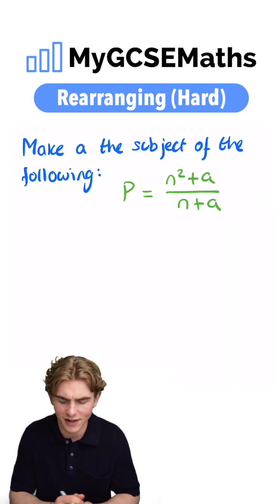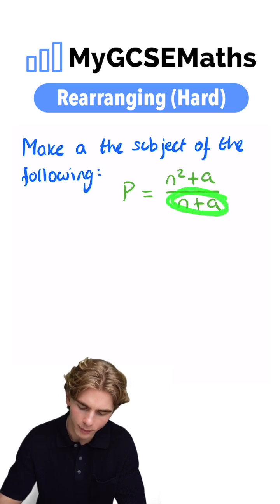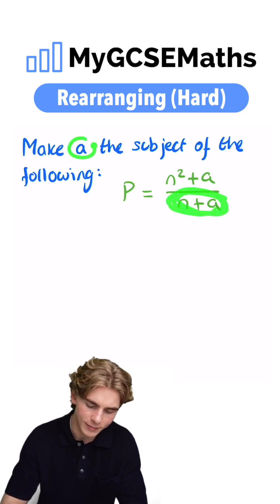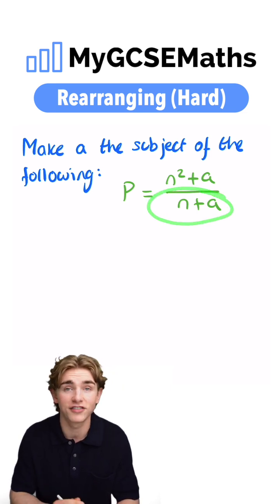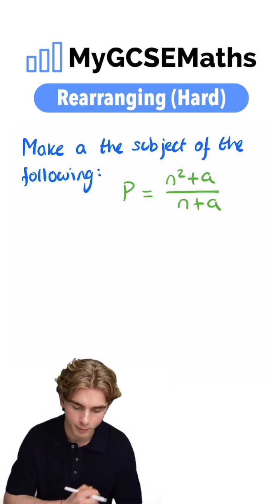Now, this is tricky. Let's have a look. At the moment, we have an N plus A on the bottom of our fraction, and we want A to be the subject. So we don't really like that. What we're going to do to remove N plus A from the bottom of our fraction is multiply both sides by N plus A.